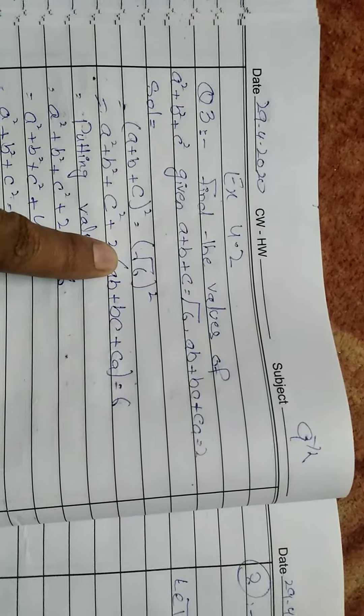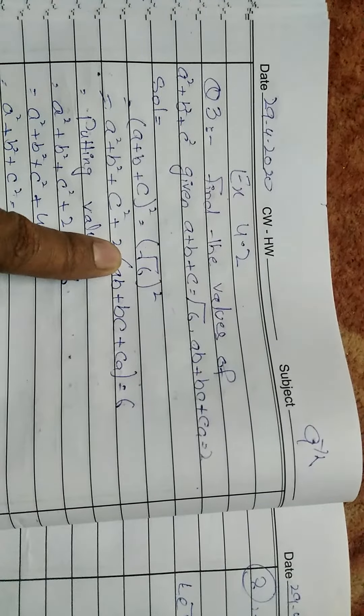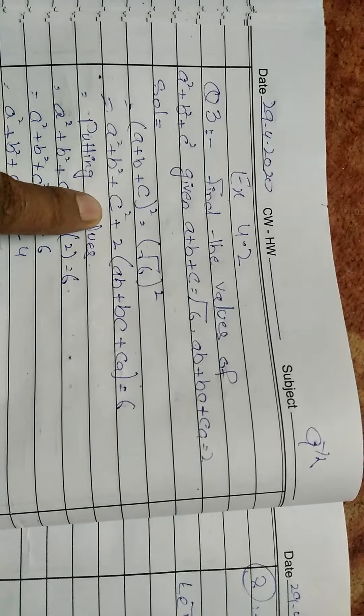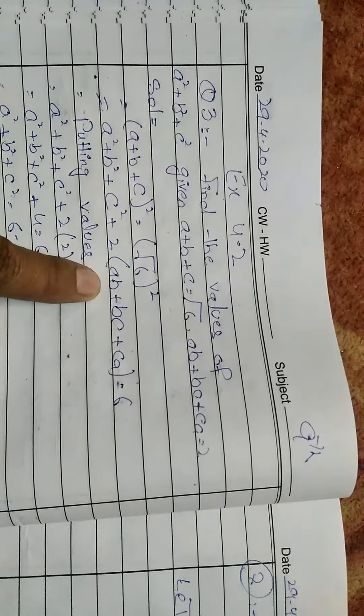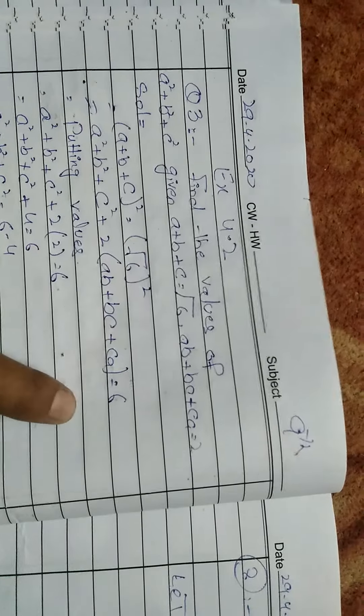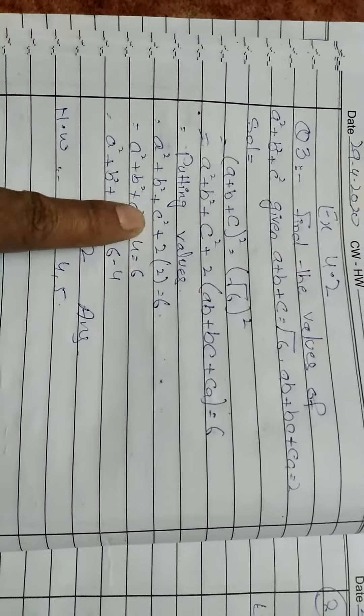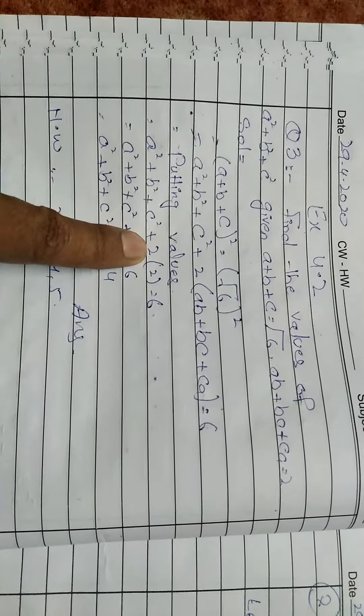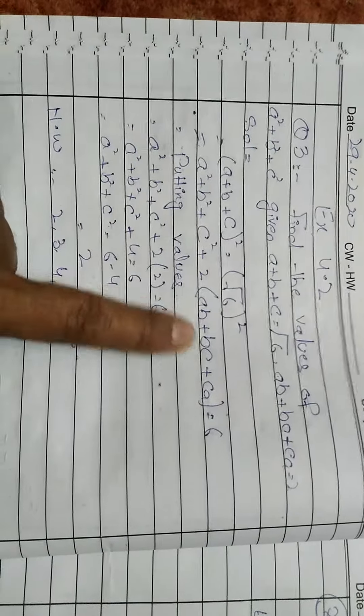We expand (a + b + c)² = a² + b² + c² + 2(ab + bc + ca). Now substituting the given values: a² + b² + c² = 6, and ab + bc + ca = 2.